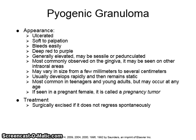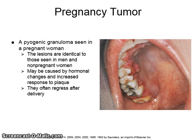Pyogenic granuloma is most common in teenagers and young adults but may occur at any age. If seen in a pregnant female, it is called a pregnancy tumor. A pregnancy tumor is a pyogenic granuloma seen in a pregnant woman; the lesions are identical to those seen in men and non-pregnant women. It may be caused by hormonal changes and increased response to plaque, and the lesions often regress after delivery.